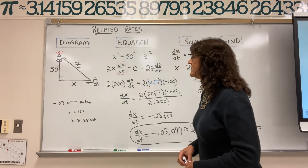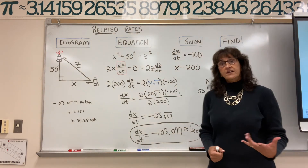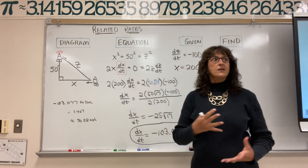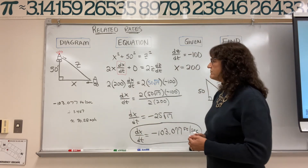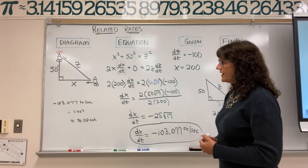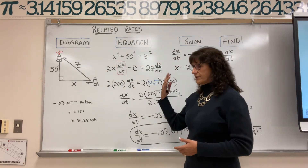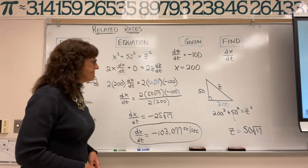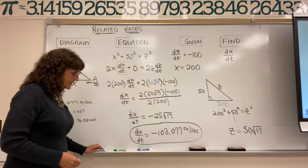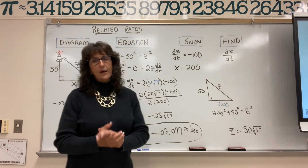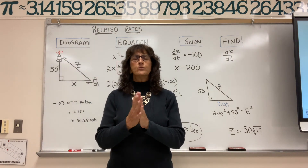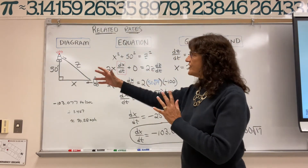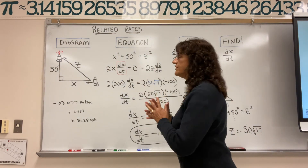So is the car speeding? I suppose it depends on where the car is. If the car's on an interstate, 70 miles an hour is usually the speed limit — we're good. But if the car's in a residential area, that would be a big speeding ticket. Anyways, this is the idea with related rates: read the problem super carefully, then set up a diagram, equation, given, and find.